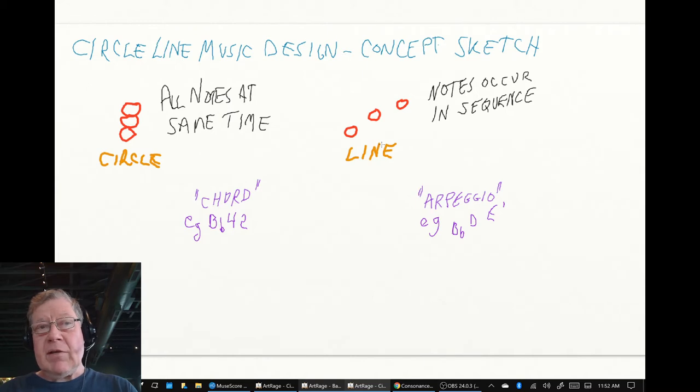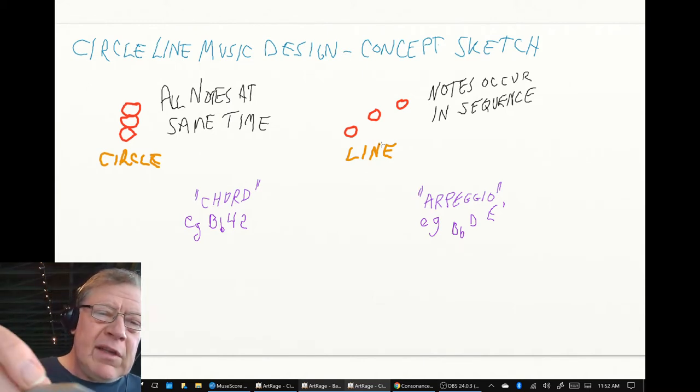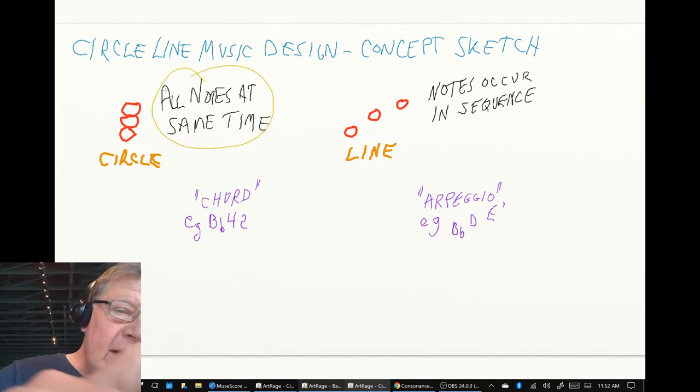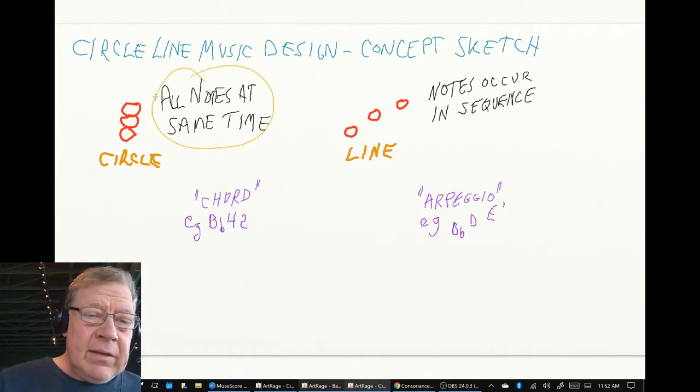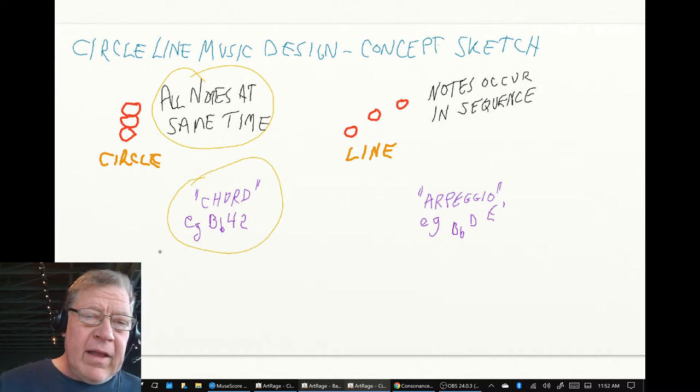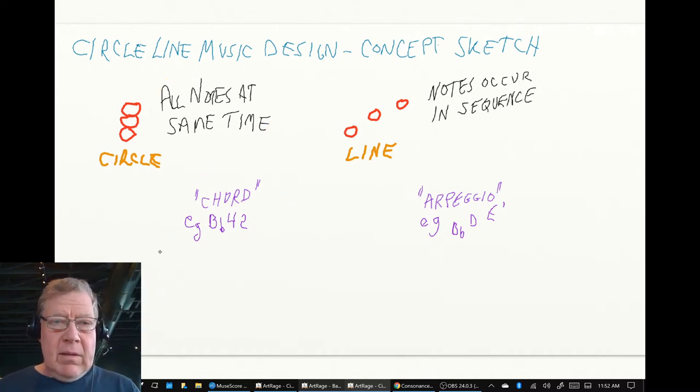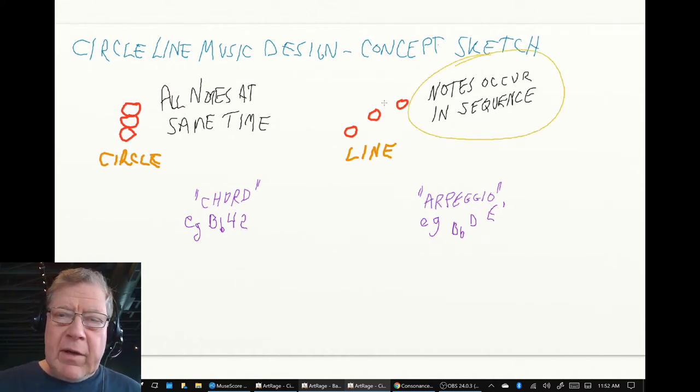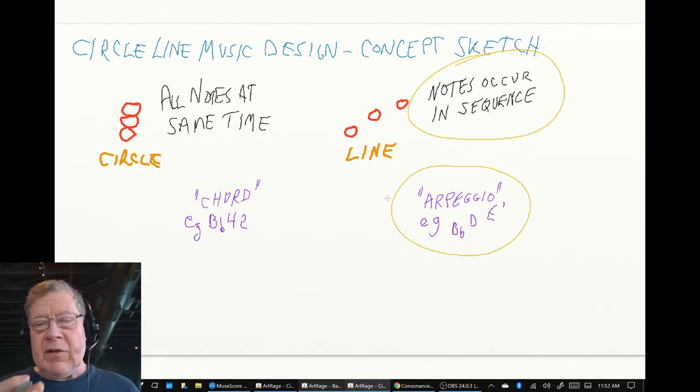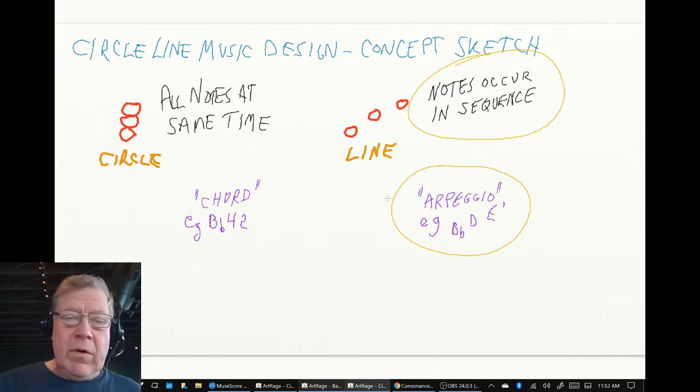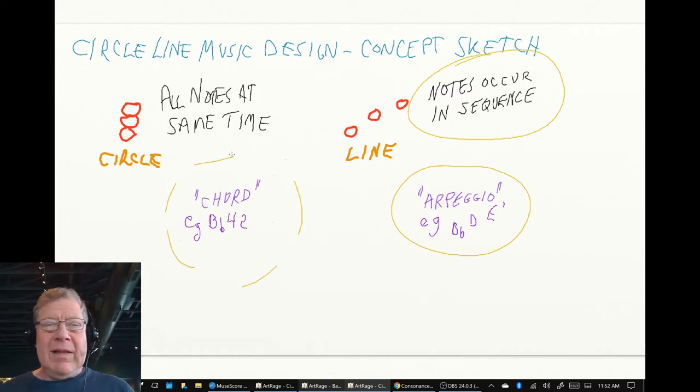In today's stream we did a concept sketch. What do we mean by circle line music design? A circle is when all notes are played at the same time, such as a chord like a B-flat 4-2 chord. A line is when the notes occur in sequence, such as an arpeggio where if we took the B-flat, D, E and played them in sequence, instead of the chord, that would be the line.